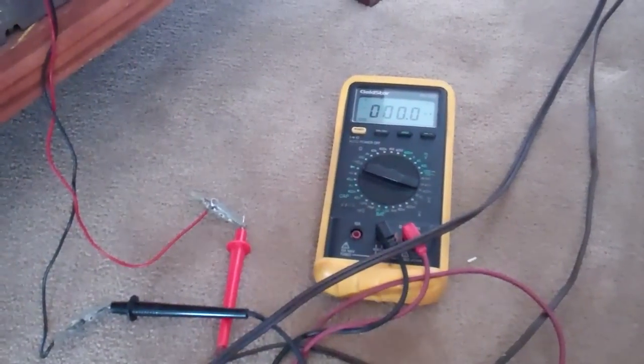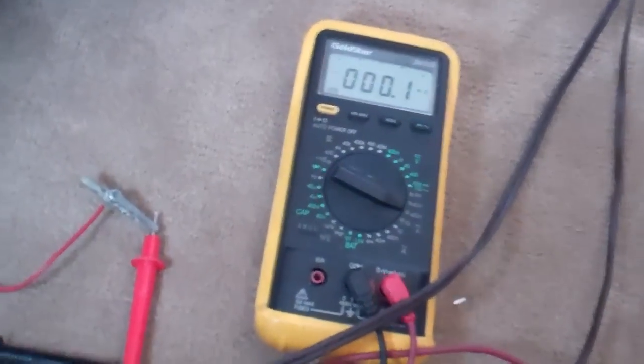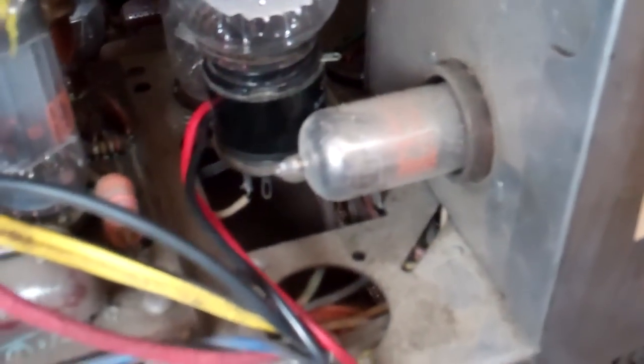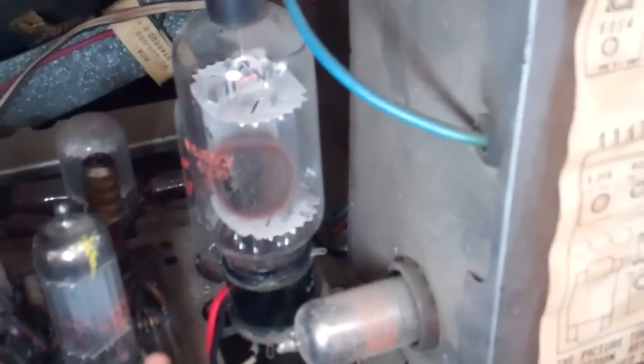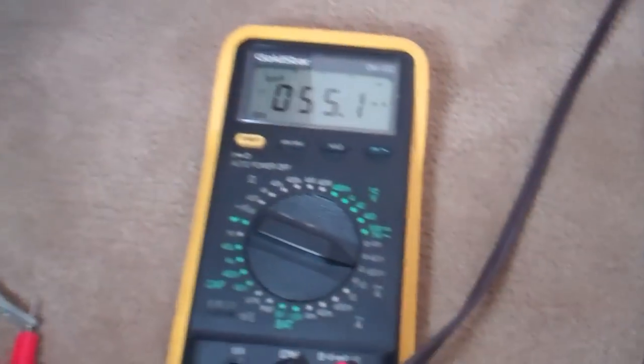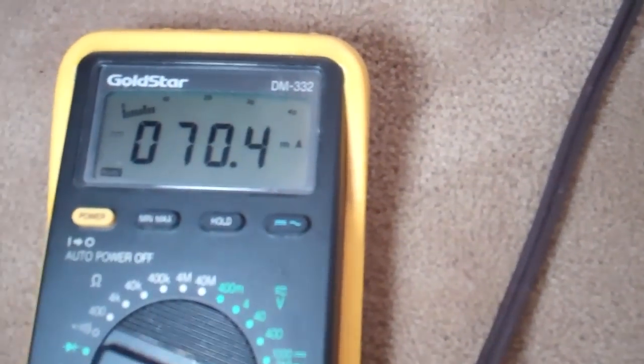One correction to that, one of the first things I'm going to do is I'm going to plug my cathode current test adapter in between the horizontal output tube and socket. Before I let it warm up, that way I don't burn myself. And you can see the set warming up here.